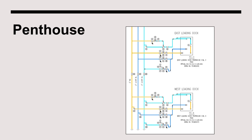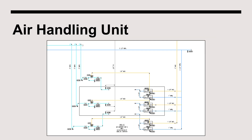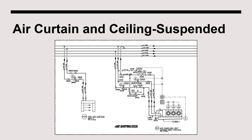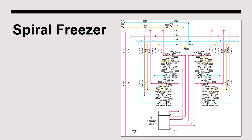This is a depiction of a penthouse style evaporator. An air handling unit P&ID could look something like this. Here is an example of an air curtain on the left next to a ceiling suspended evaporator. And here is a P&ID depiction of a spiral freezer.